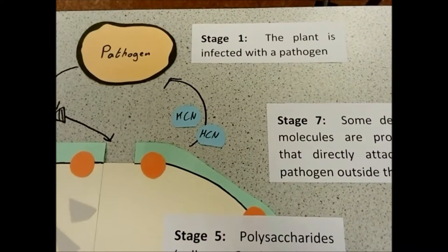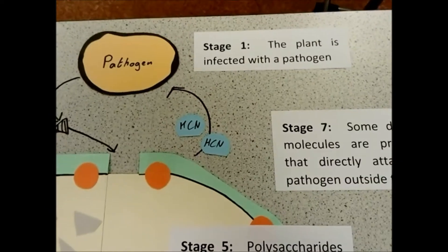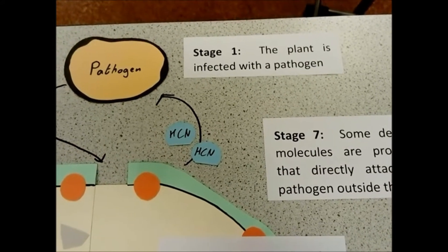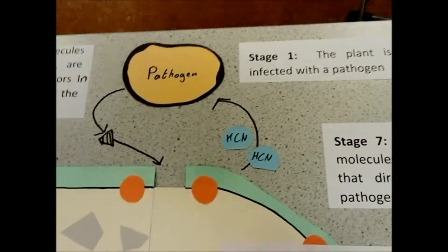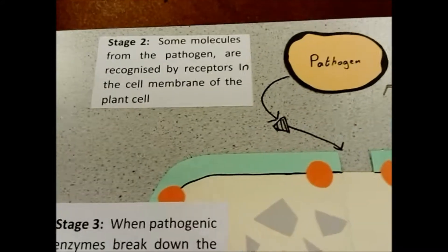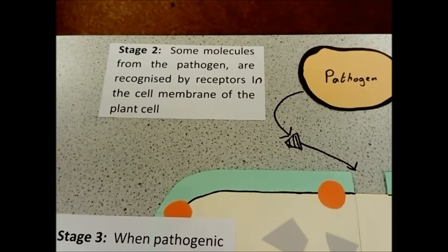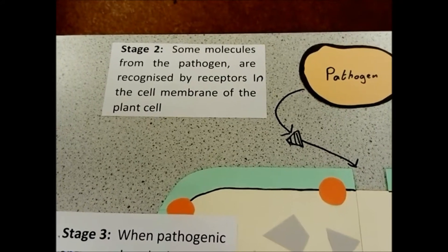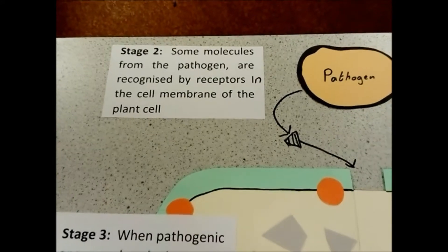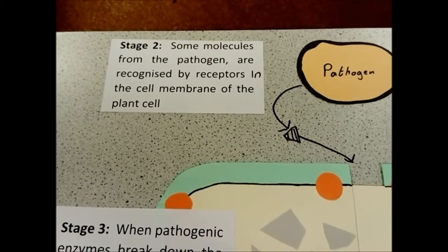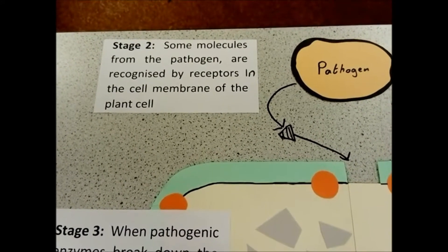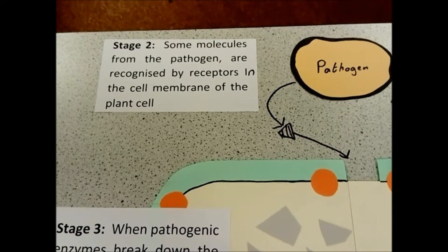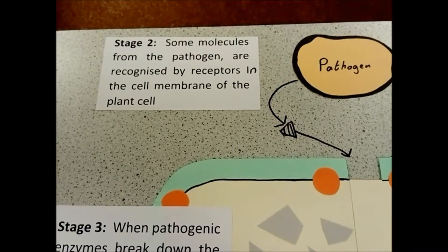The first stage is where the cell is infected with the pathogen. The second stage is where molecules from the pathogen are recognized by receptors in the cell membrane of the plant.